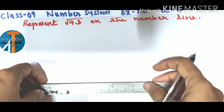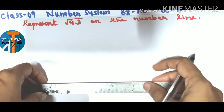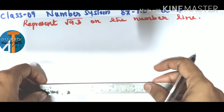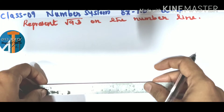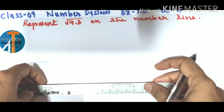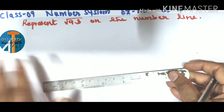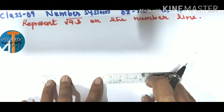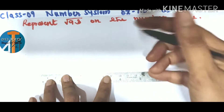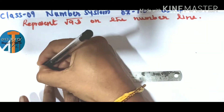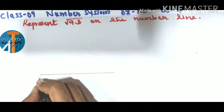Hello everyone, welcome to DVS Math. I am Deepa Prasad. Today we are continuing Number System Class 9, Exercise 1.5, Question 4: Represent √9.3 on the number line. In the previous session we had represented √7, √3, and √5 on the number line. Now we are going to represent √9.3 on the number line. For that, first take a scale and draw a line segment of 9.3 centimeters. Mark this as A and B.